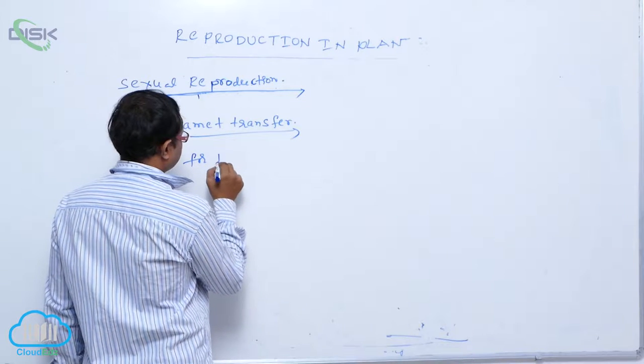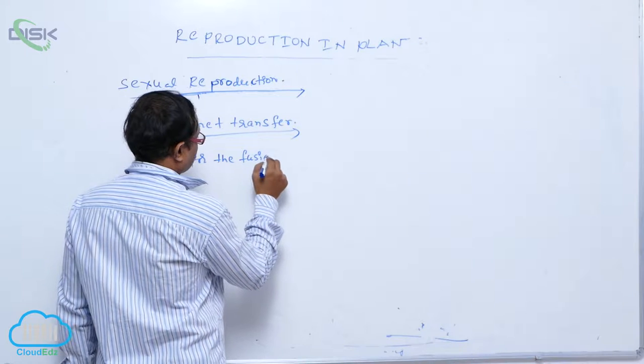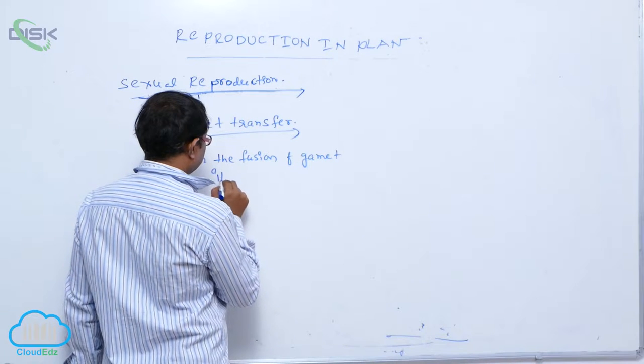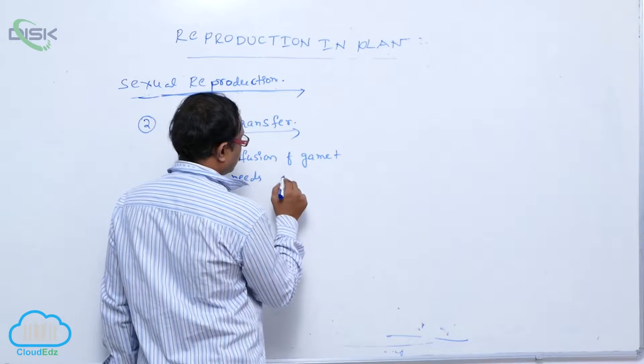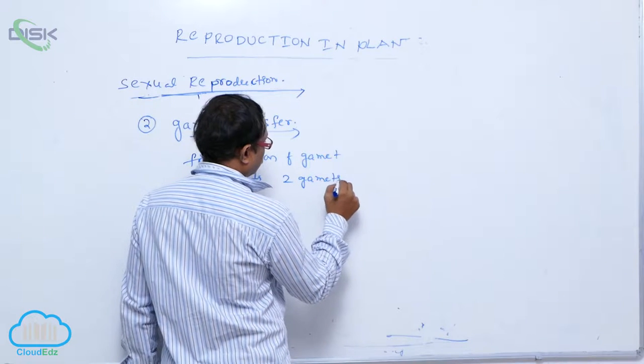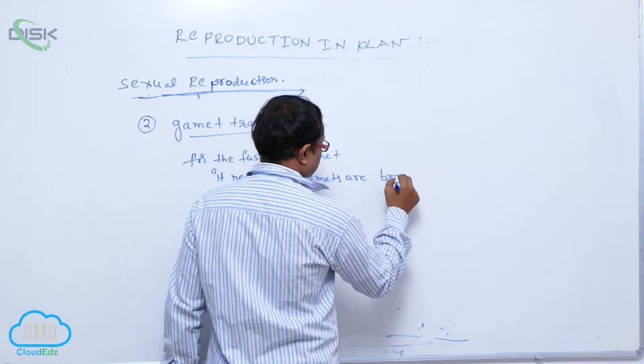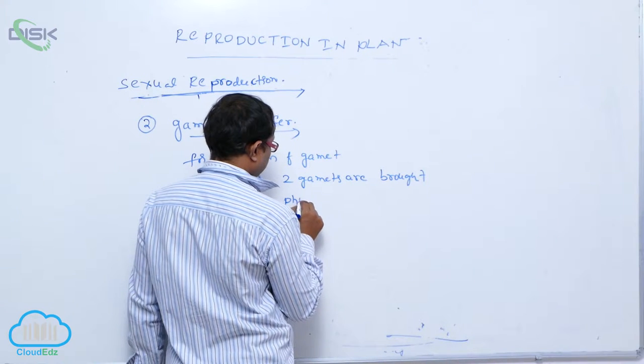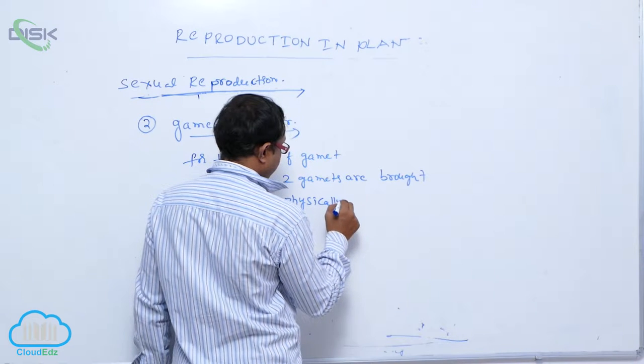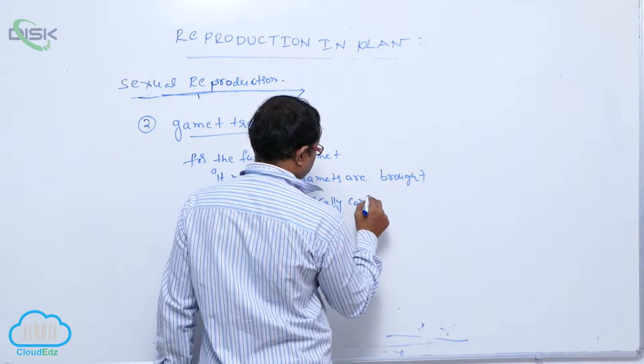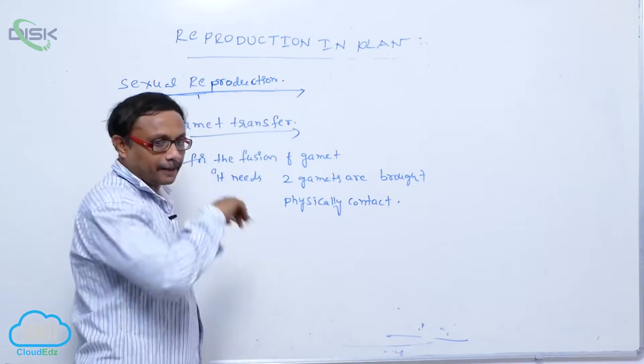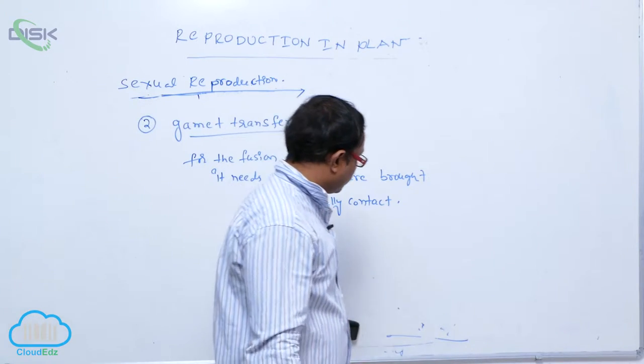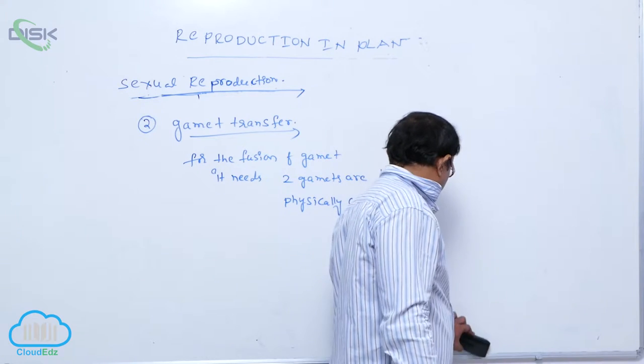For the fusion of gametes, it needs two gametes to be brought together. Two gametes are physically in contact - this is necessary for the fusion of gametes. For example, in some organisms, male gamete and female gamete, both are in motile condition.